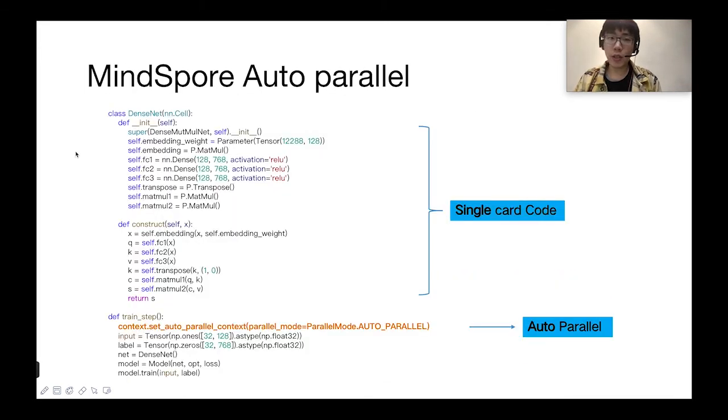This is an example code of auto parallel. We init and construct a simple dense net, and in our train steps, the first part is a context set. In this one line of code, we just set the parallel mode to auto parallel, then leave the rest things to the system.